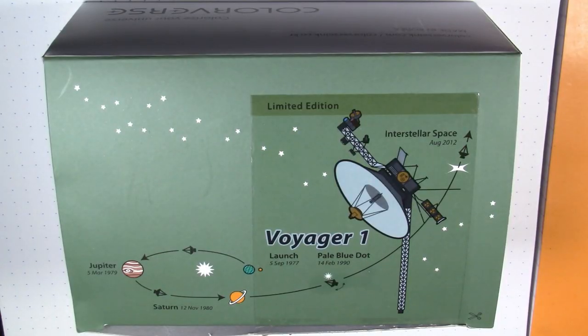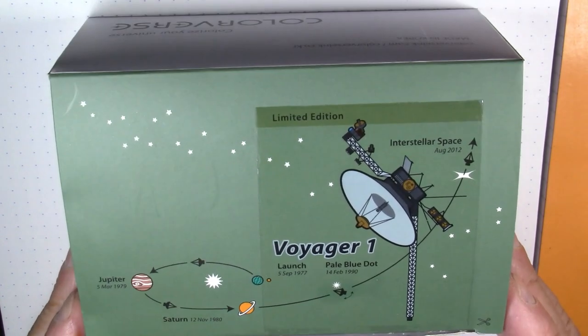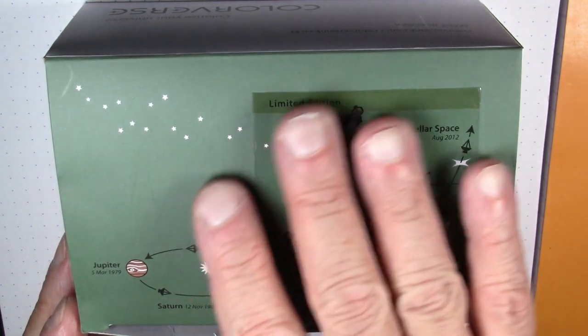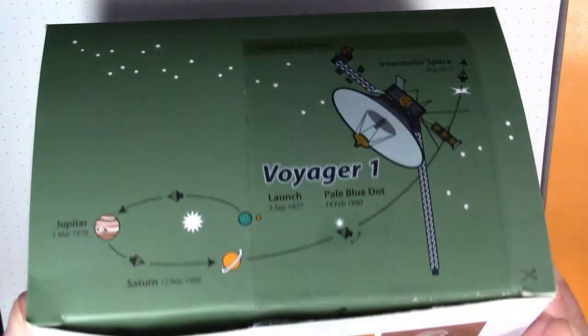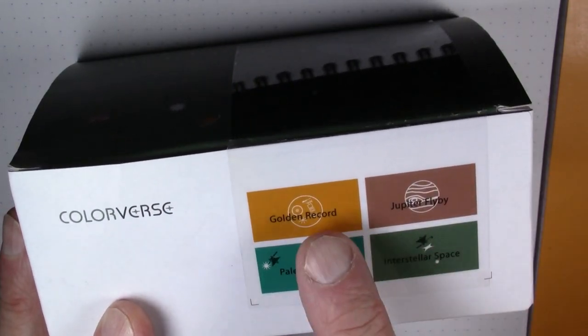I don't do too many ink unboxings, but this one definitely warrants it. So this ink is part of a limited edition set. This is from Colorverse, which is a Korean ink company. This is a limited edition Voyager 1 commemorative set. It comes with four different inks, which we'll see in a minute. This ink that we're using today is the Golden Record, which is one of the four.